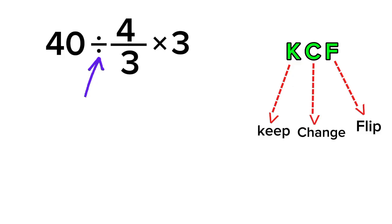Keep the first number, change division to multiplication, and flip the second fraction. So we keep 40, change the division to multiplication, and flip 4 thirds to 3 fourths. That gives us 40 times 3 fourths.